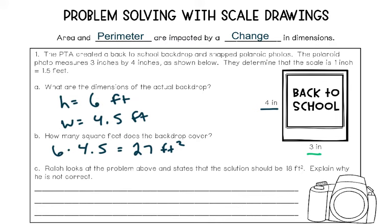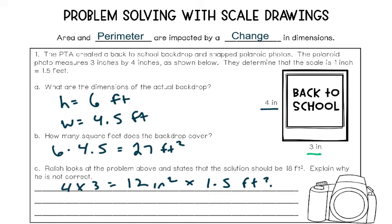Let me tell you what Ralph was thinking. He says we can multiply the height and width of the Polaroid — 4 times 3 — and get 12 inches squared, which is the area of the Polaroid. Then since it's been scaled, we can multiply by 1.5 feet to get 18. But you found the actual area of the backdrop is 27 square feet. You cannot take the area of the small version and multiply it by the scale factor. You have to multiply the width and the height individually by the scale factor, and then multiply the new dimensions together to get the actual area.